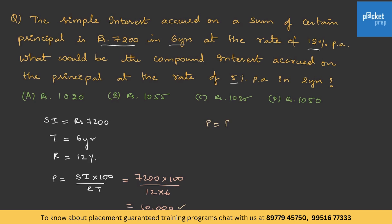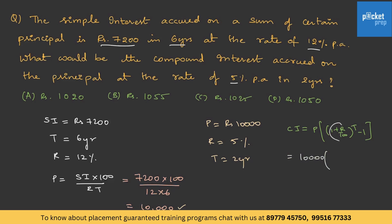Now for the compound interest, we use P = rupees 10,000, rate = 5%, and time = 2 years. Using the formula CI = P × [(1 + r/100)^t − 1]: CI = 10,000 × (1.05² − 1) = 10,000 × 0.1025 = rupees 1025. Therefore the answer is option C.